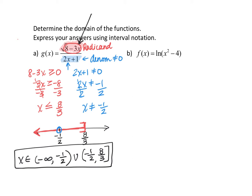Moving on to part b: f of x is equal to the natural log of x squared minus 4. We are taking the natural log of the quantity x squared minus 4. To review vocabulary, what you're taking the log of is called the argument. So our argument is x squared minus 4. We have restrictions here because the argument of a logarithm must be positive — you can't take the log of a negative number, and you can't take the log of 0. So the argument, x squared minus 4, must be greater than 0.